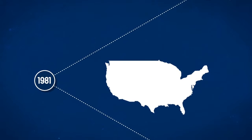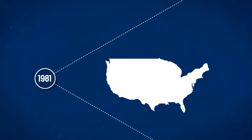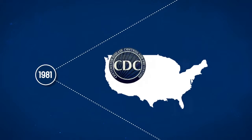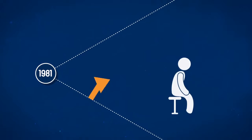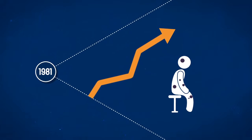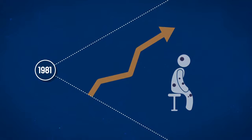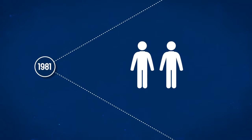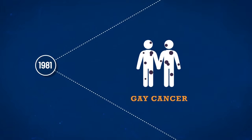In 1981, the renowned Centers for Disease Control and Prevention, or CDC, in Atlanta, observed an increase in cases of Kaposi's sarcoma, a rare form of cancer. Because it affected a large number of men who have sex with men, it was initially called the gay cancer.